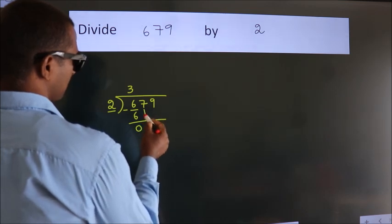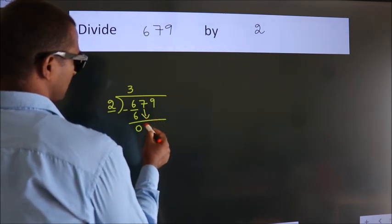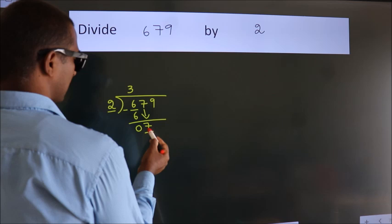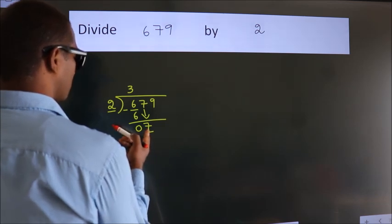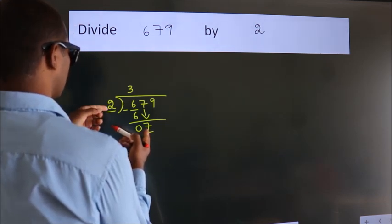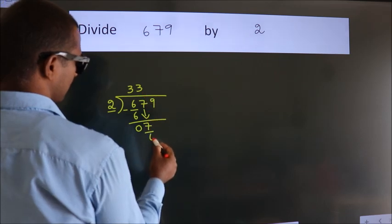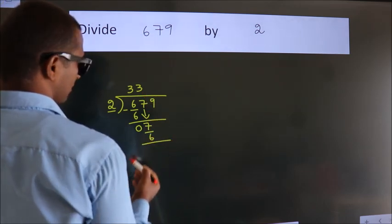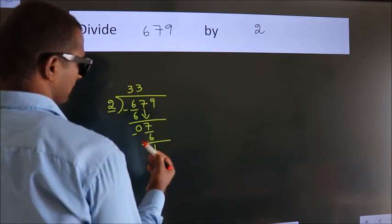After this, bring down the next number. 7 down. A number close to 7 in the 2 times table is 2 times 3 equals 6. Now we subtract. We get 1.